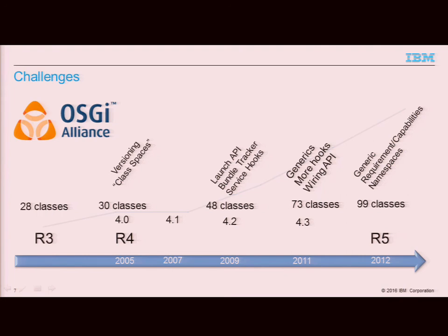Now, why is it challenging in terms of implementing the latest standard? If you look at how OSGi has developed from R3 to R5, you see that even just the bare API has grown quite significantly from just 28 classes to 99 classes for R5, and there are some serious feature additions to the standard. One of the biggest things added to R5 is the generic requirements-capabilities model and the namespaces model. Previously, the only thing an OSGi framework could use in order to resolve software was package imports or the slightly ill-defined way of doing bundle dependencies. That was basically all.